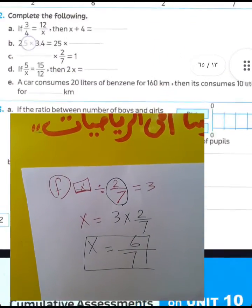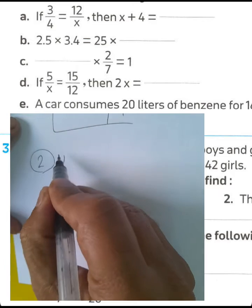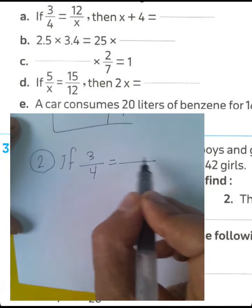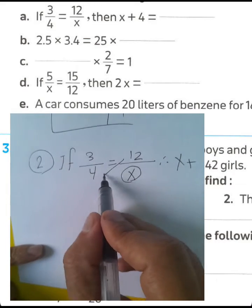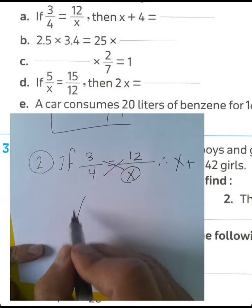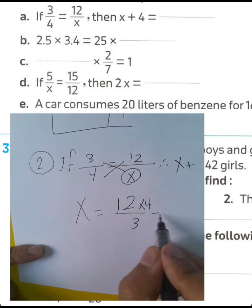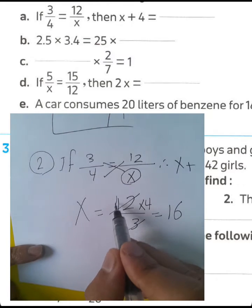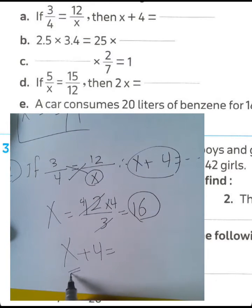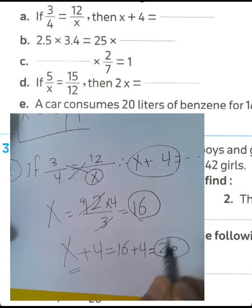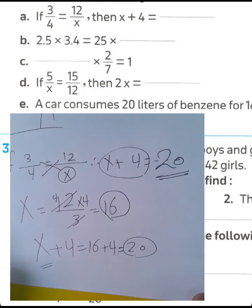Question number two — complete the following. Letter A: 3 over 4 equals 12 over x, then find x plus 4. First, find x using the product of extremes equals product of means: 3 times x equals 12 times 4, so 12 divided by 3 equals 4, then 4 times 4 equals 16. The value of x equals 16. Therefore x plus 4 equals 16 plus 4 equals 20.